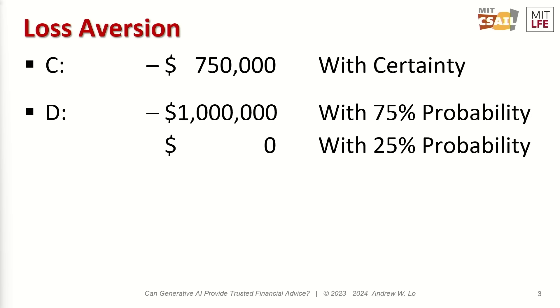Investment D is a lottery ticket where you will lose a million dollars with 75% probability and nothing with 25% probability. In this case, the expected values are identical — they're minus $750,000. But in the case of D, you don't get to lose $750,000; you lose a million or nothing.